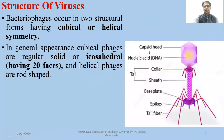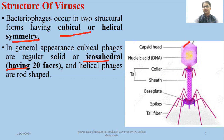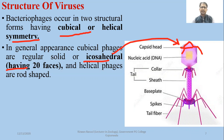Overall, the bacterial phages have two basic forms: cubical or helical symmetry. In general appearance, cubical phages are regular solids and are icosahedral. Icosahedral means 20 sides or 20 facets — 10 on one side and 10 on another — giving it essentially a hexagonal shape.